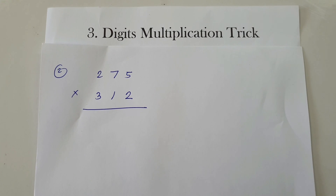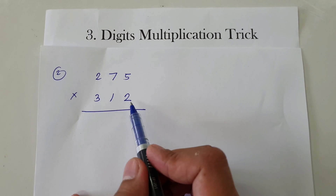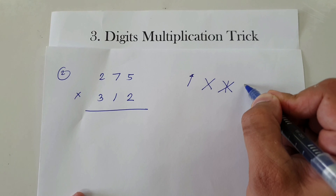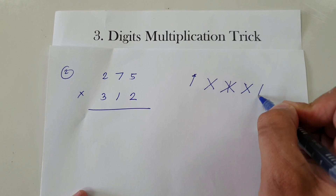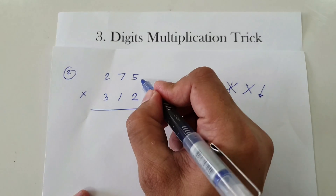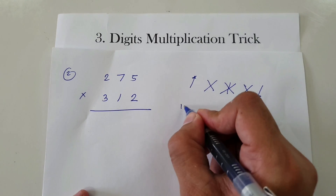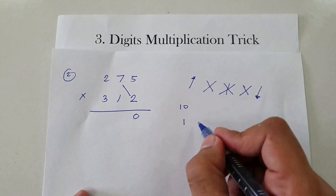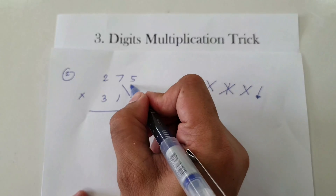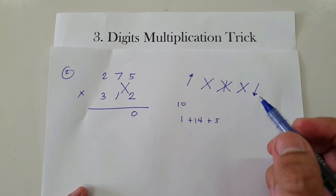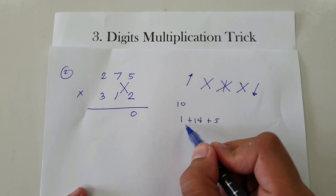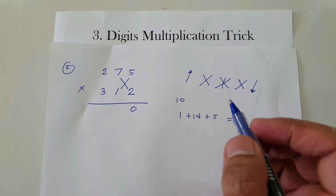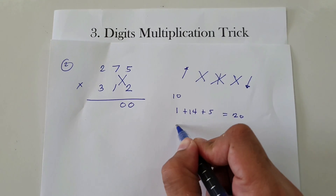Next example: 275 times 312. So again: up, cross, crossbar, cross, then down. Down: 5 multiplied by 2 is 10. We have 0 and carry 1. Cross: 7 times 2 is 14, and 5 times 1 is 5. Adding 1 plus 14 plus 5, that's 20. We have 0 and carry 2.